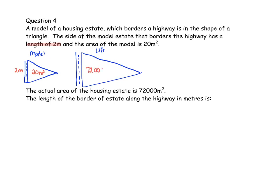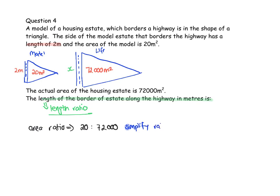The actual area of the housing estate is 72,000 square meters. What we want is the length of the border along the highway, so we need the length ratio. But we were only given the area ratio, so first let's work out the area ratio: it's 20 to 72,000. We always simplify first.